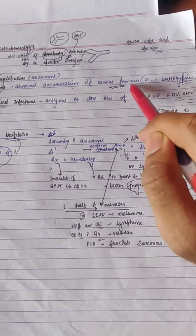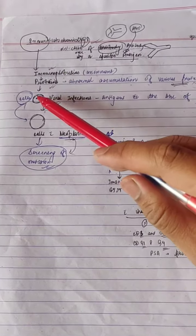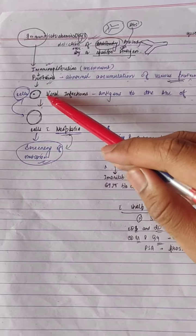For example, alpha-1 antitrypsin. These are cells, these are viruses.